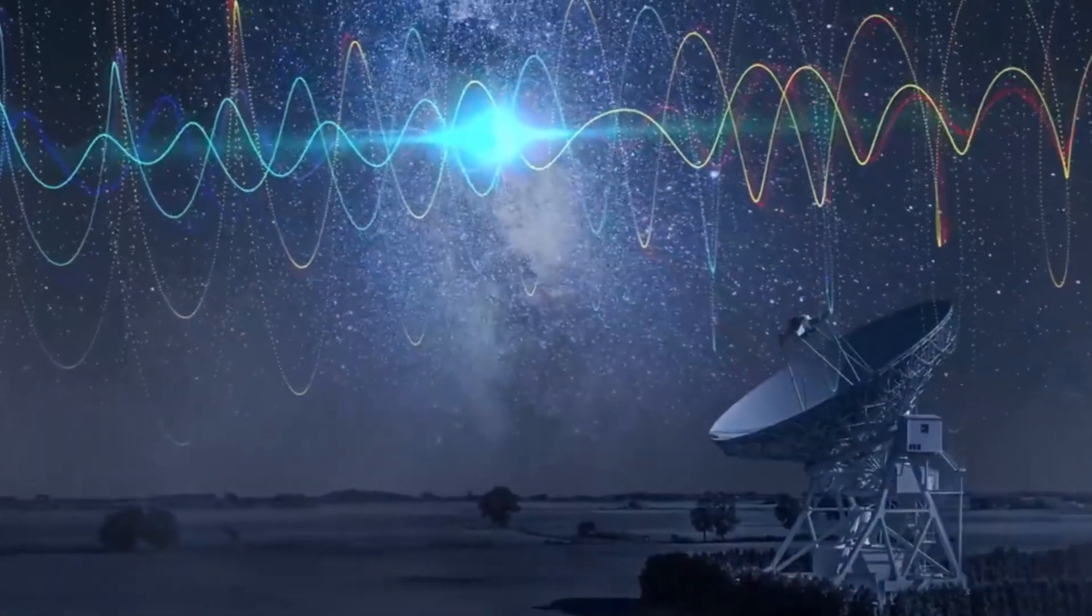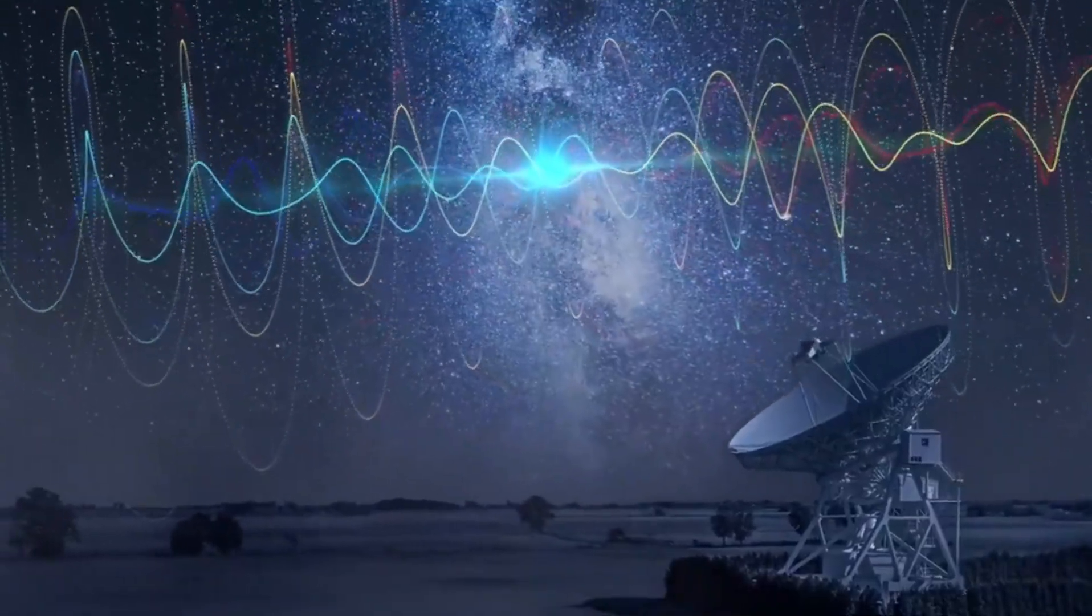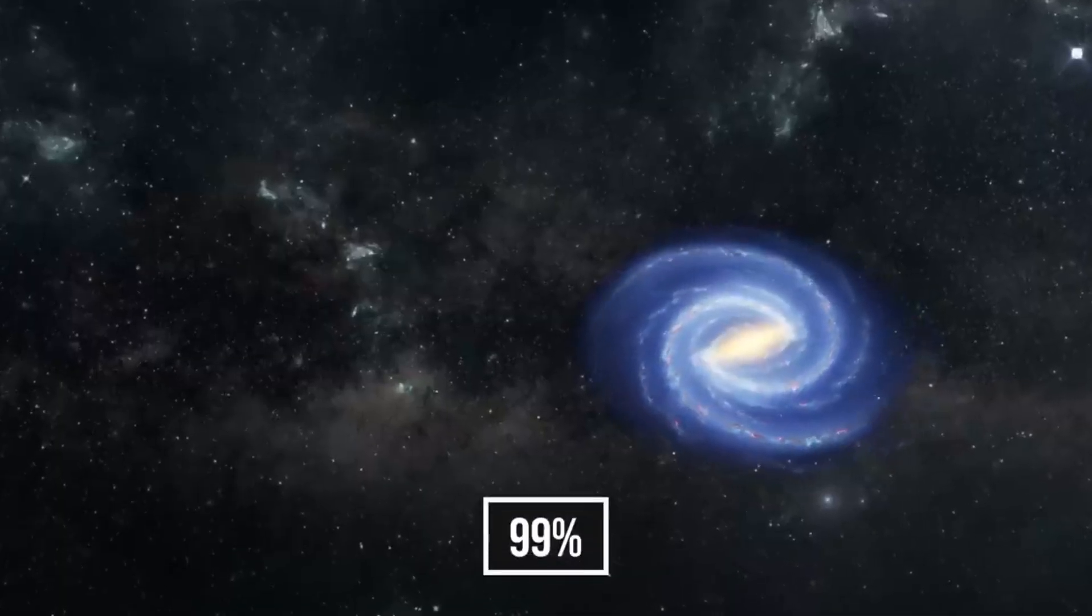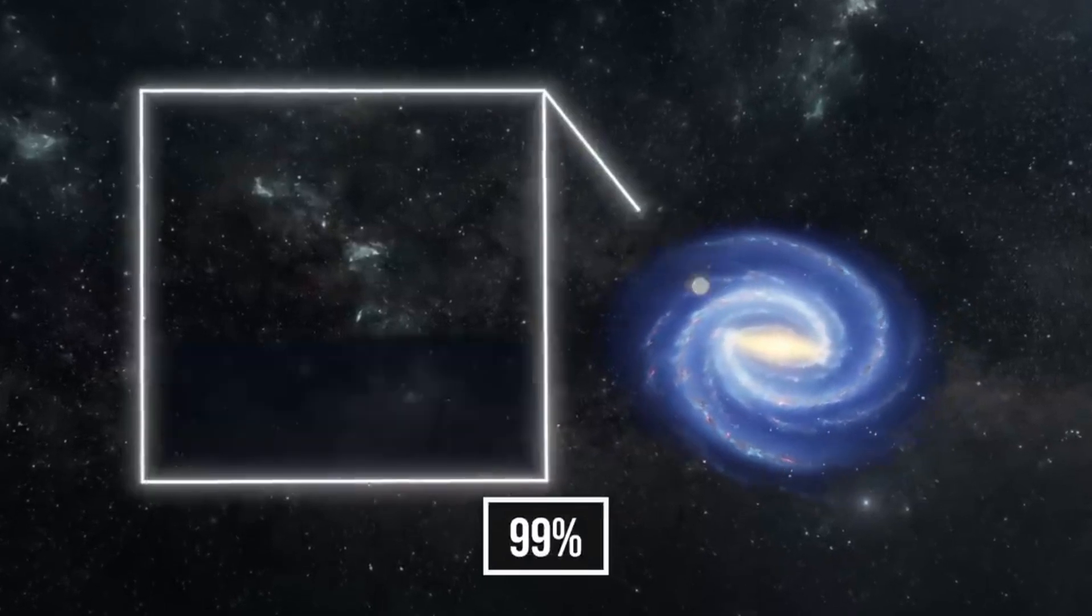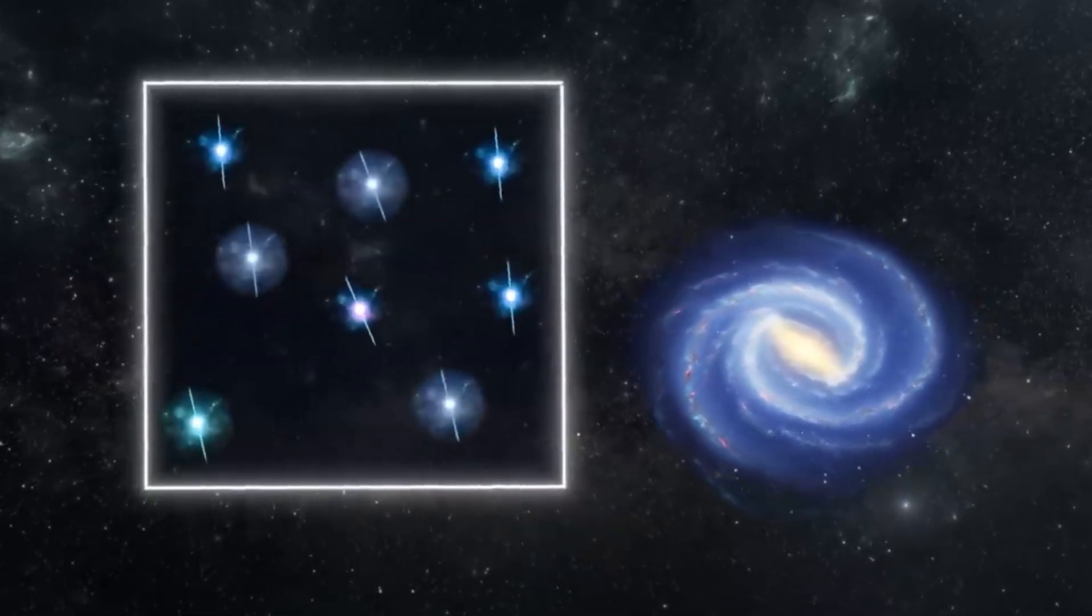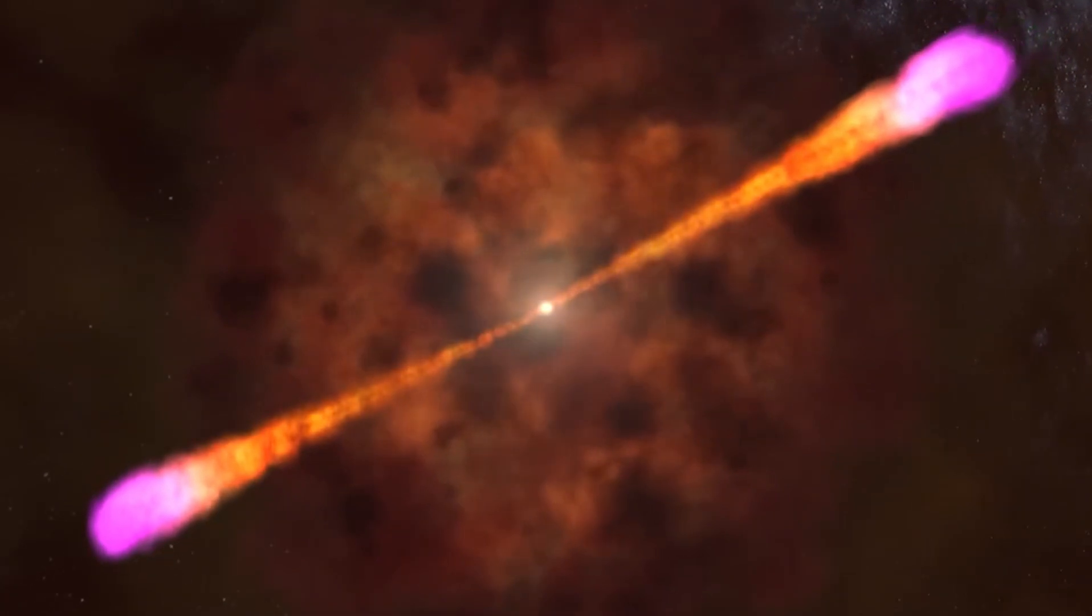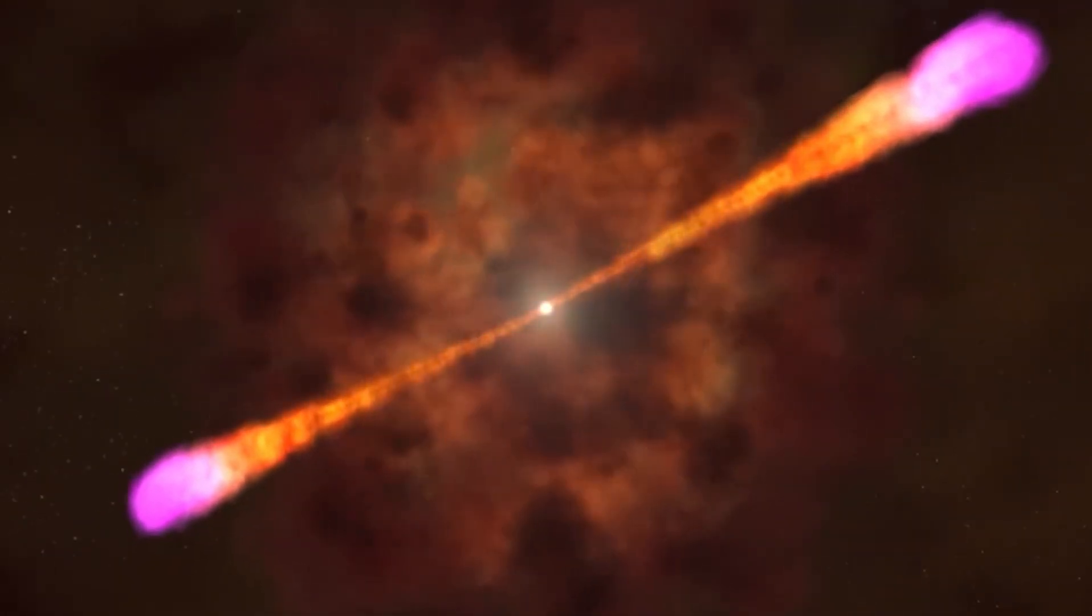This usually isn't odd for a pulsar. These are the timekeepers of the universe, the clocks of the cosmos, mechanistically ticking away with such certainty that we can use them to measure time across vast stretches of the universe. However, this level of stability is odd for a pulsar that is rotating so slowly.